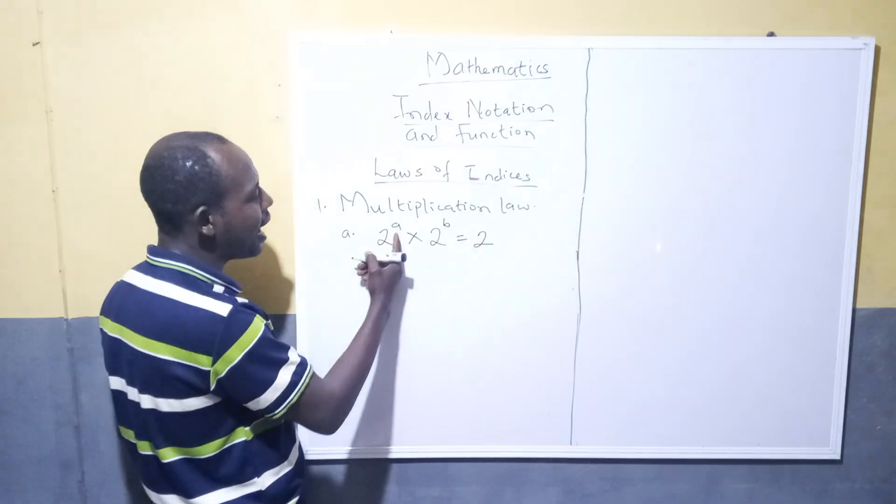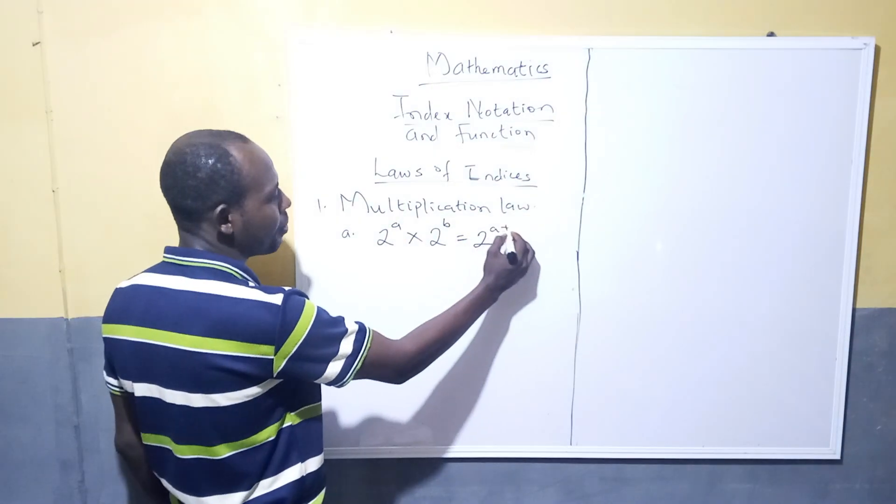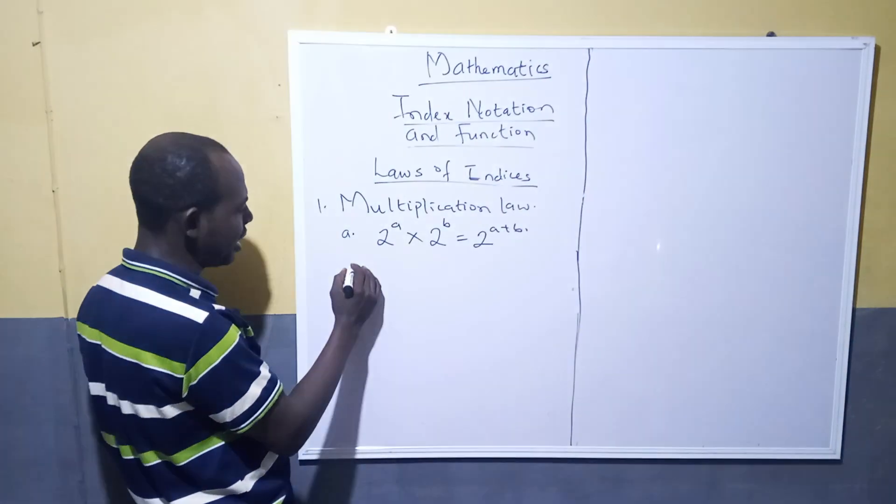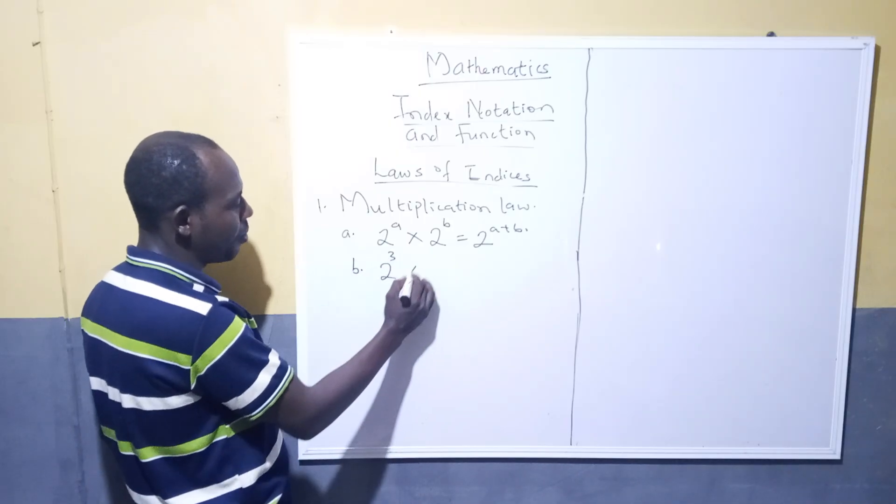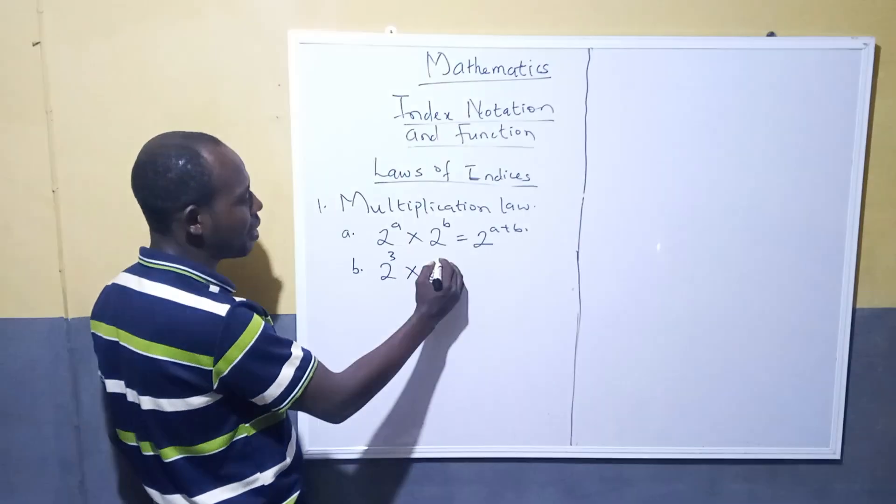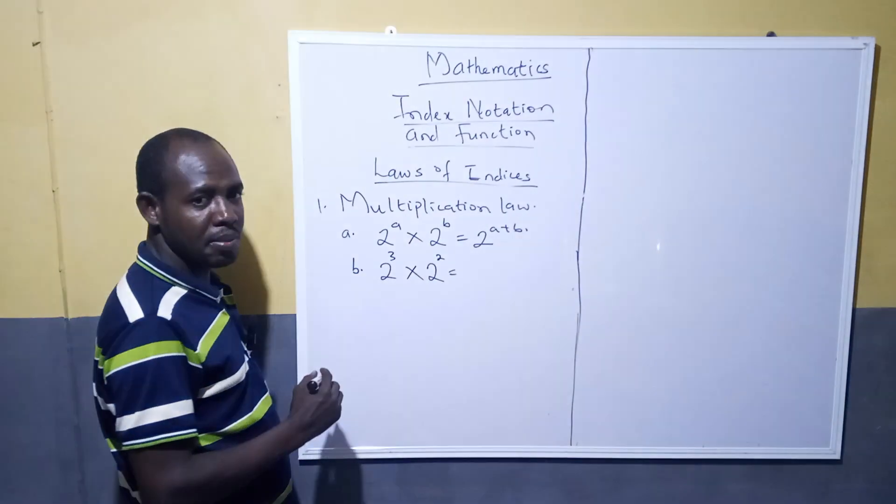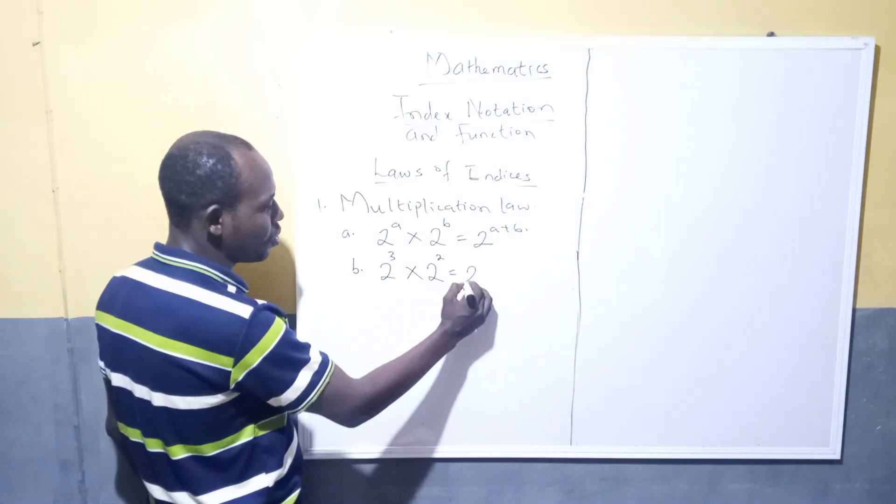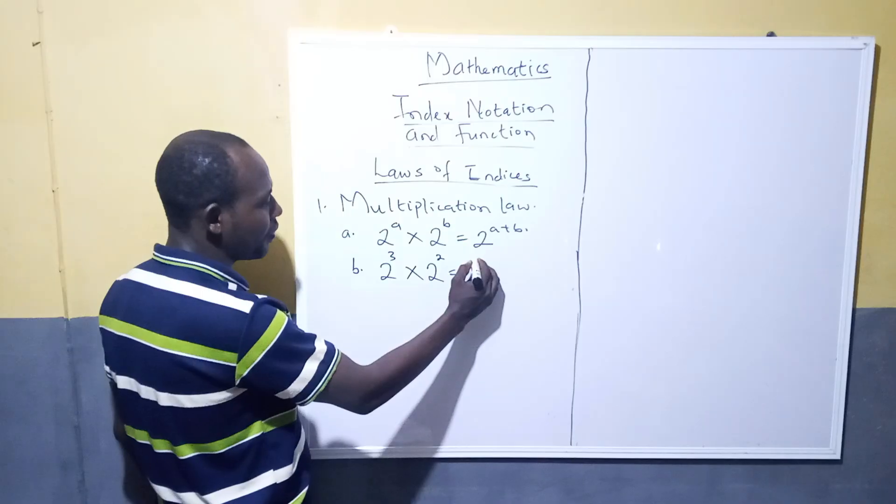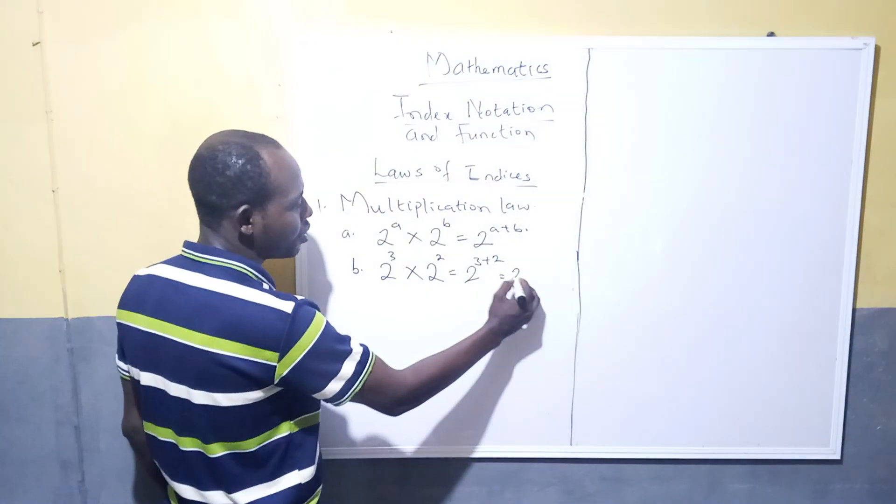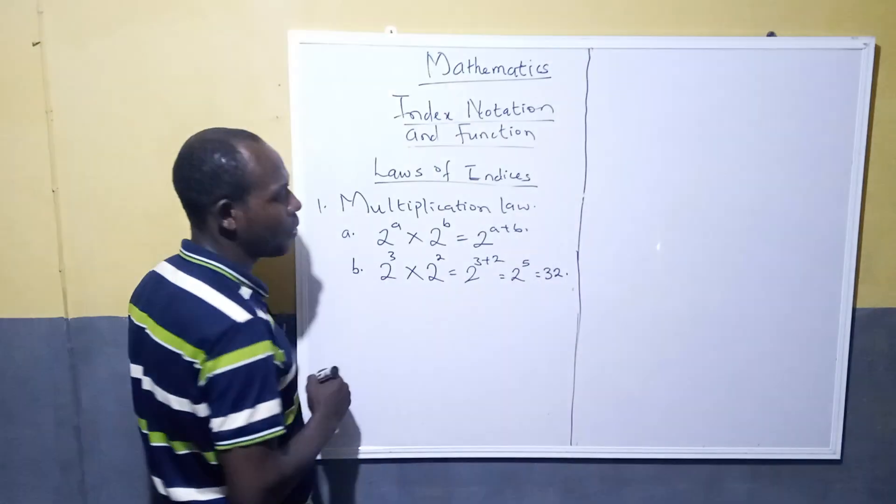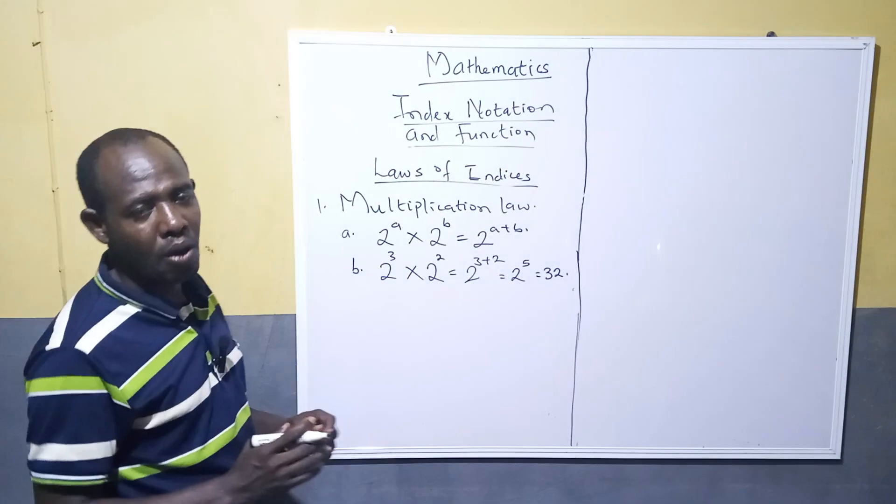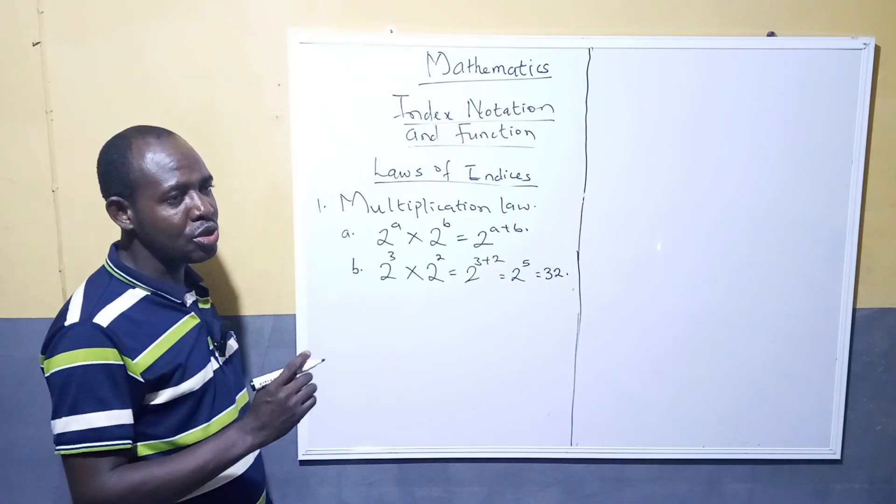Take another example. We have 2 raised to power 3 multiplied by 2 raised to power of 2. This is simply 2 raised to power 3 plus 2, which is 2 raised to power 5, which is 32. Now when you have a group of numbers, how do you do it?